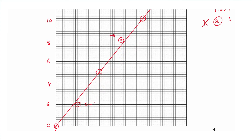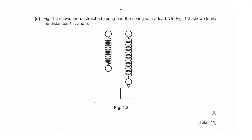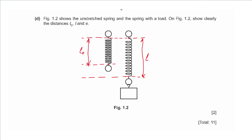Part d says figure 1.2 shows the unstretched spring and the spring with a load. We must clearly show L0 (top to bottom of spring with no load), L (new total length after adding load), and e (the difference between L and L0, which is the extension).